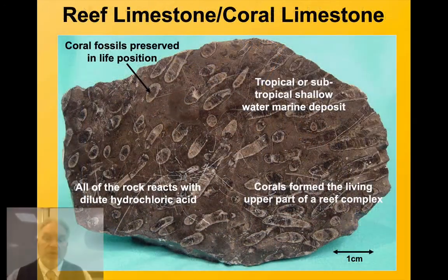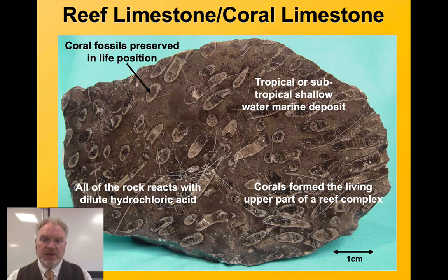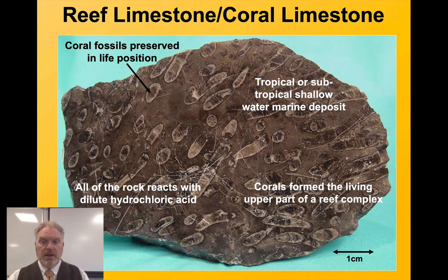This is another common type of limestone. We call it sometimes a reef limestone or a coral limestone. Here we see well-preserved coral fossils making up a substantial proportion of the rock. Those corals, when they're alive, were trapping sediment around them, with calcite being precipitated from the sea, particularly in warm, tropical, shallow seas.